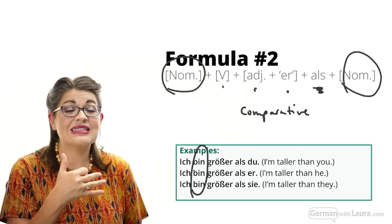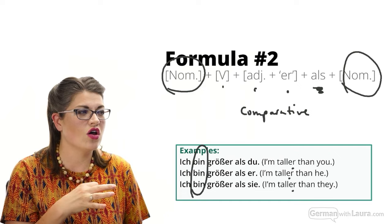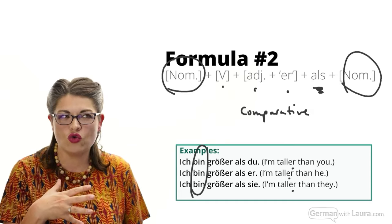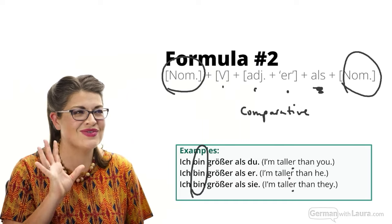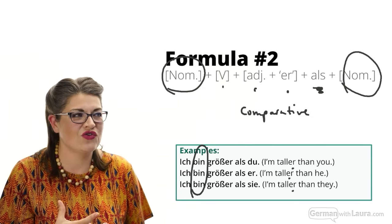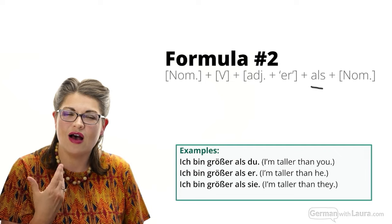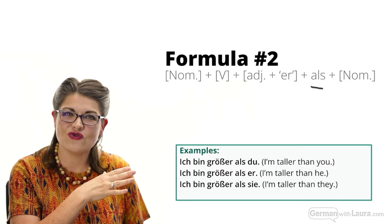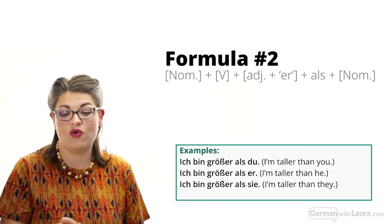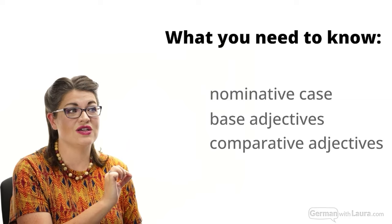Then we have the base adjective plus '-er,' putting it into what's called the comparative form. In German it works the same as in English — 'taller' — just with '-er' added. In German: 'größer,' 'größer,' 'größer,' sometimes also adding an umlaut. To use either formula correctly, you need to be comfortable with three subject areas: the nominative case, base adjectives, and comparative adjectives.